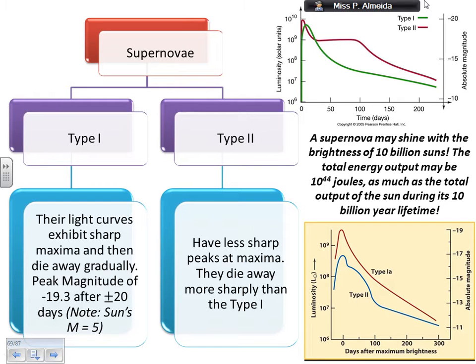So for a type 1 supernova, I have a big peak in the magnitude — a very sharp peak up at the top — and then it stays elevated for a little bit longer before declining.